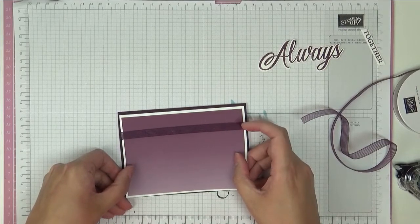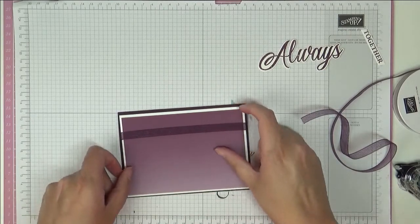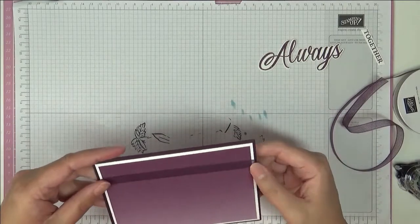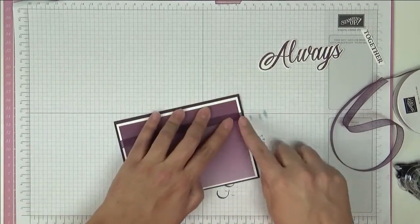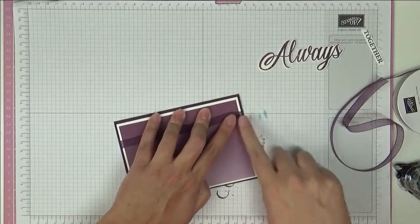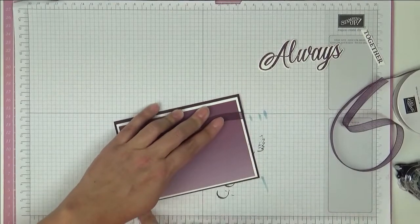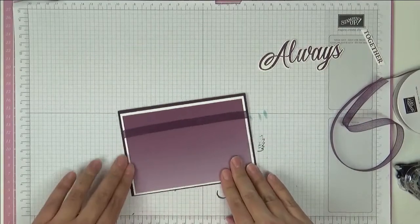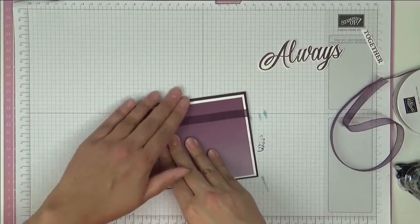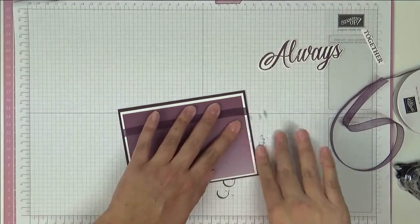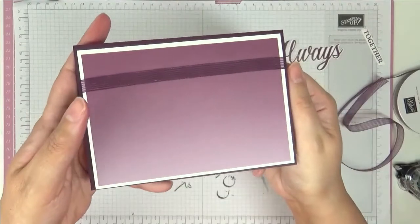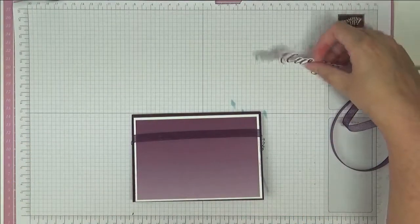And put this down on your Blackberry Bliss card base. That's a standard A6 card base, an A4 sheet cut in half and then folded in half. I've got some spare glue here so I'm just getting rid of that. So that's what we've got so far.